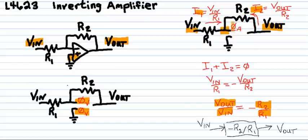Since there's no current into the ideal op amp, I one must be the negative of I two or Kirchhoff's current law says I one plus I two equals zero.